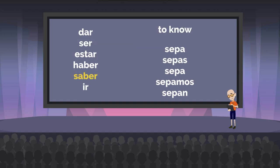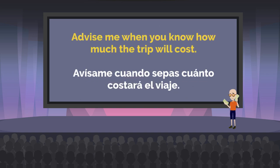Our next verb is saber, which means to know. There's another verb that means to know — conocer — and they're used in different circumstances. Saber is used to know facts or to know how to do something. Our forms are sepa, sepas, sepa, sepamos, sepan. And our sample sentence: 'Advise me when you know how much the trip will cost.' Avísame cuando sepas cuánto costará el viaje.